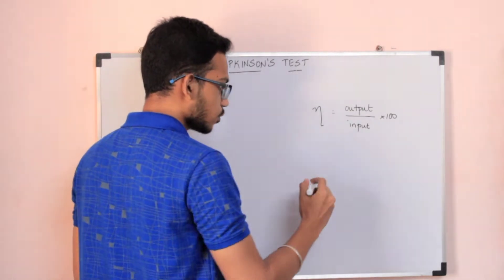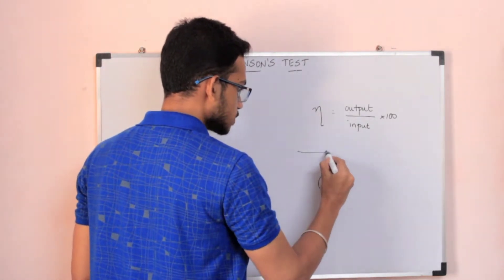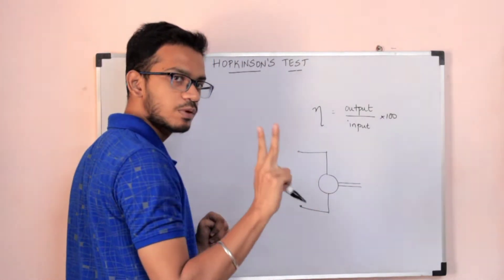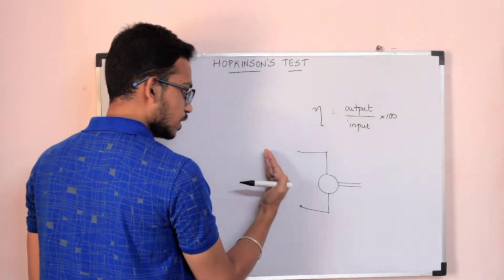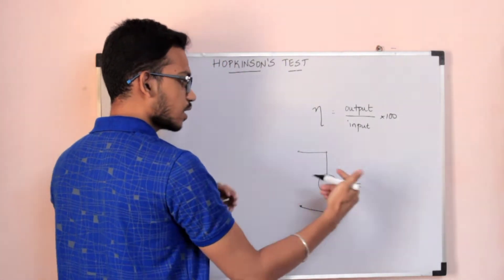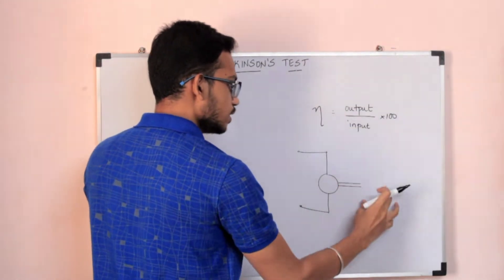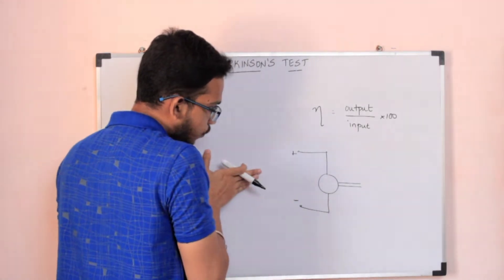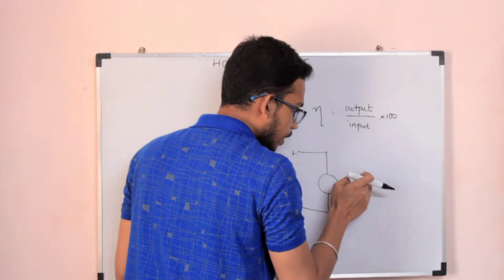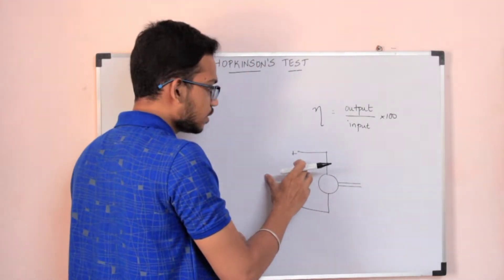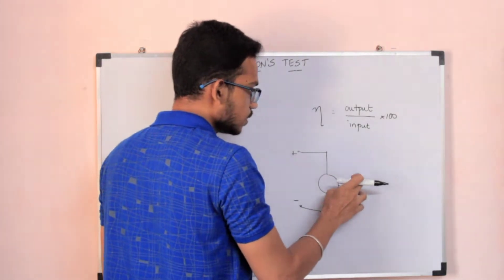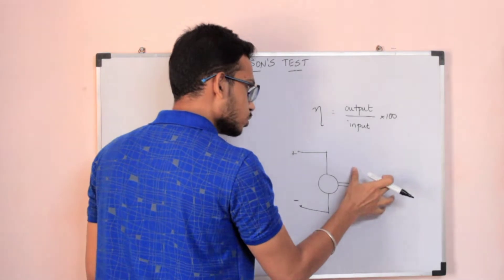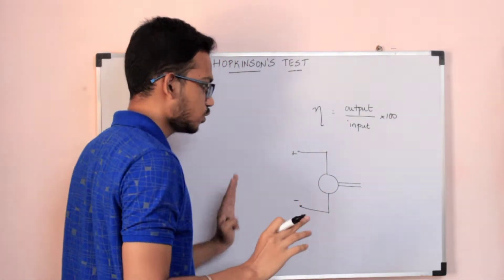The load test is one test. What we do is take a machine — on one side is the electrical side, and on the other side is the mechanical side. To measure efficiency, we either take mechanical input and measure electrical output, or take electrical input as the motor and measure the mechanical power output. Output divided by input gives the efficiency.